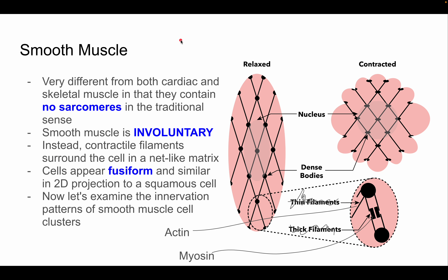Let's start with smooth muscle — the simplest type, though that's subjective. Smooth muscle is very different from cardiac and skeletal in that it contains no sarcomeres in the traditional sense. Smooth muscle is always involuntary, and instead of sarcomere-based contractile filaments, the filaments are arranged on the cell in a net-like matrix.